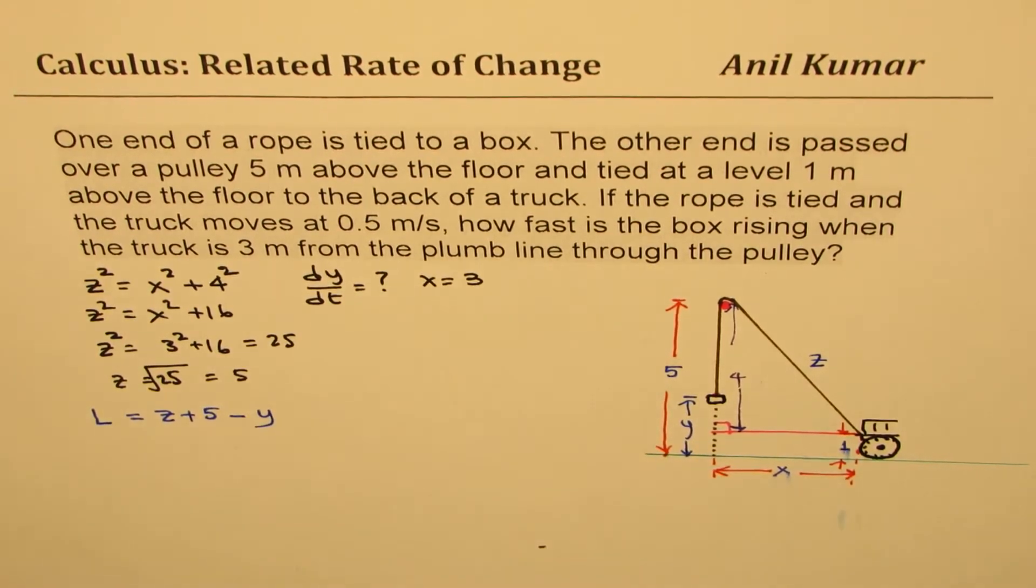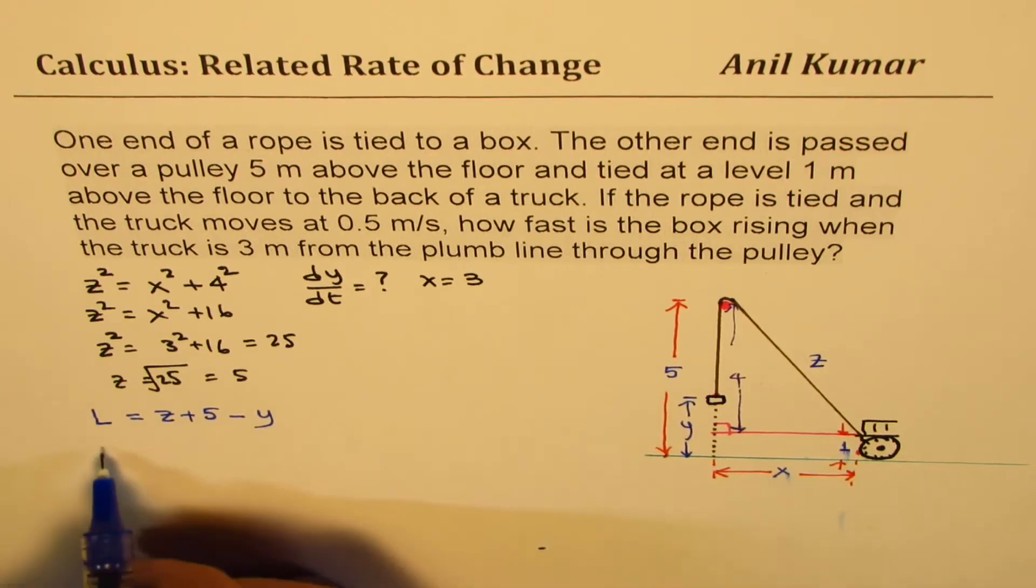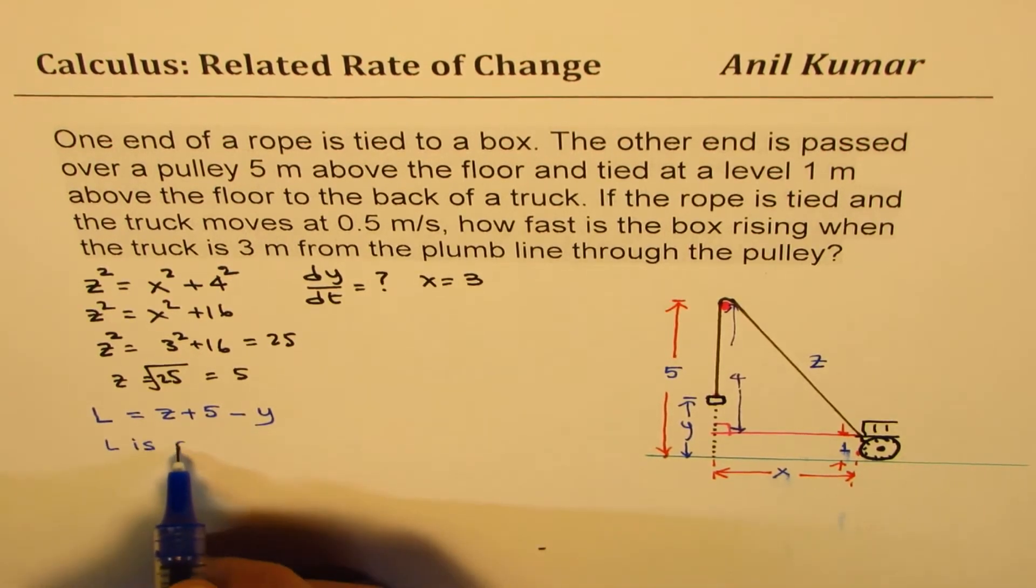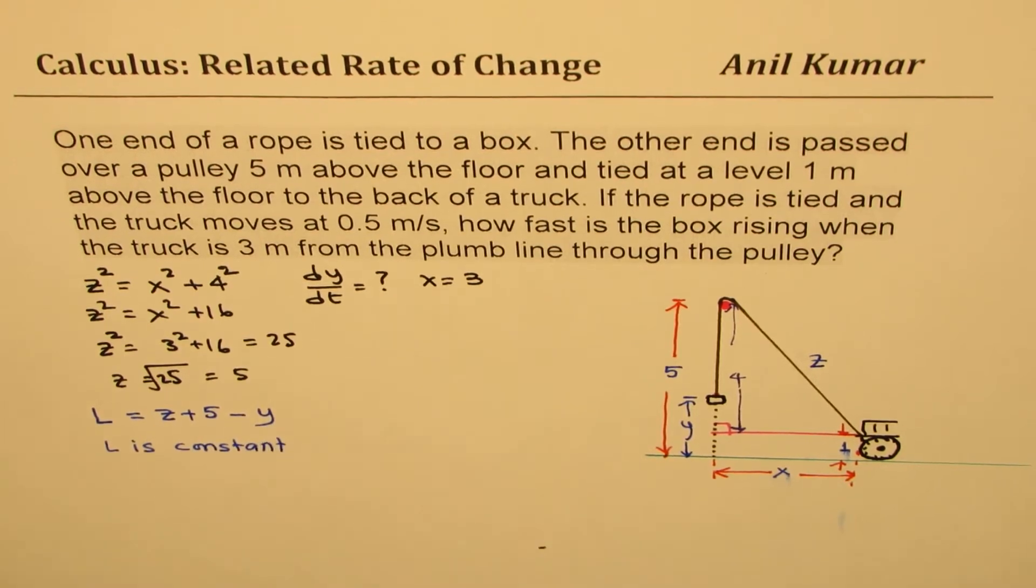You get the point. So we have related Y with our terms. That's critical, where L is constant. You understand the idea. So that gives you the equation.